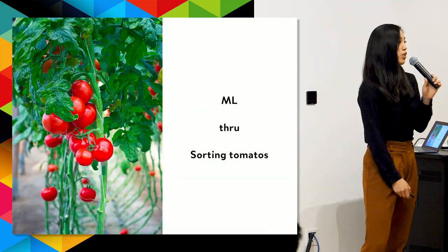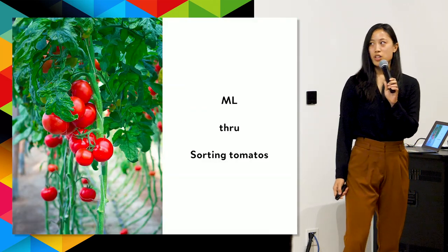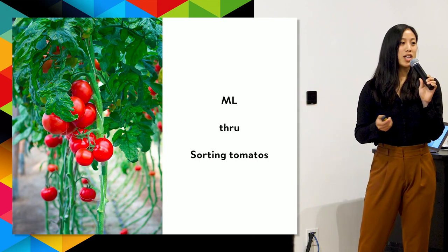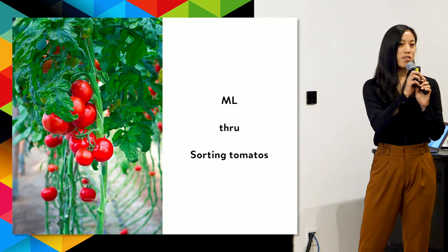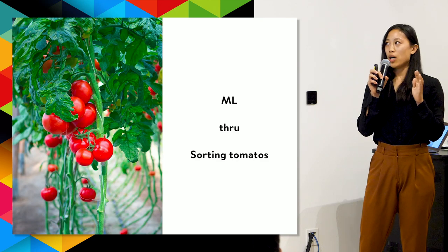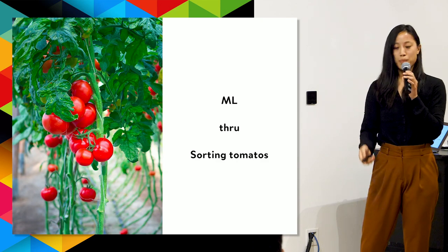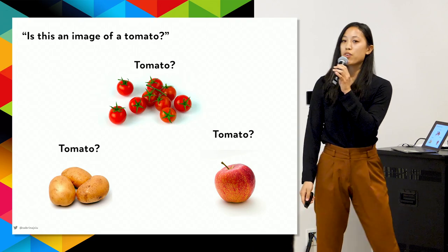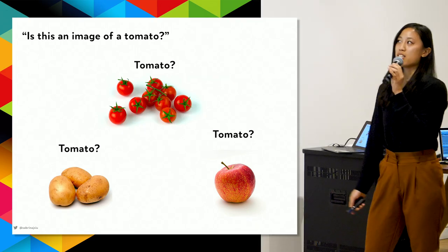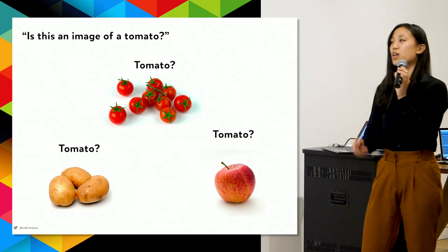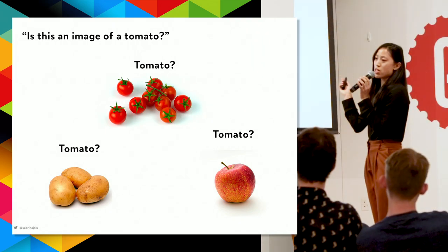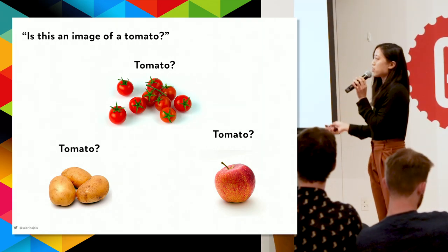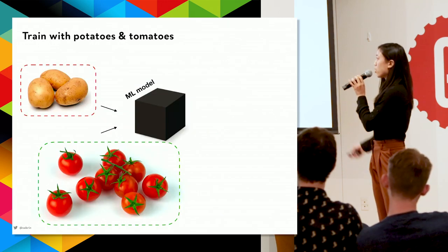For those who don't work with machine learning, I've started by including an example of machine learning through sorting tomatoes. This will illustrate a very specific set of machine learning models. Let's frame our question as: is this an image of a tomato? We know what a tomato is, but let's say our model doesn't — until we start training it.